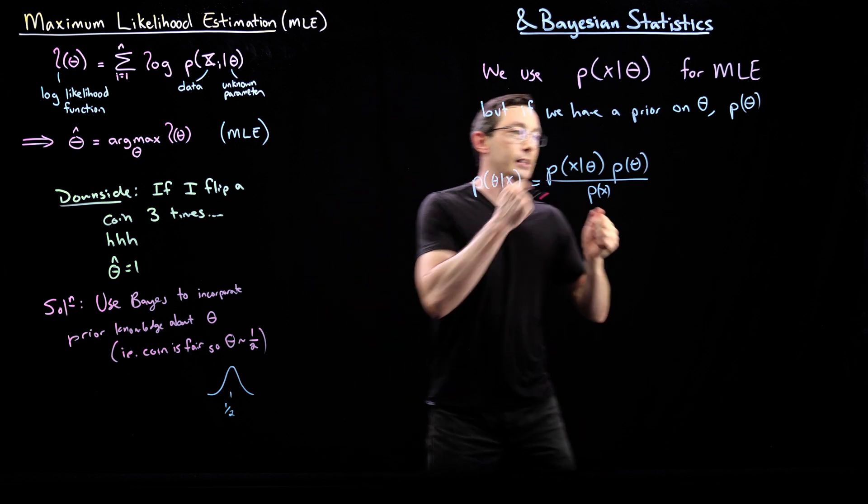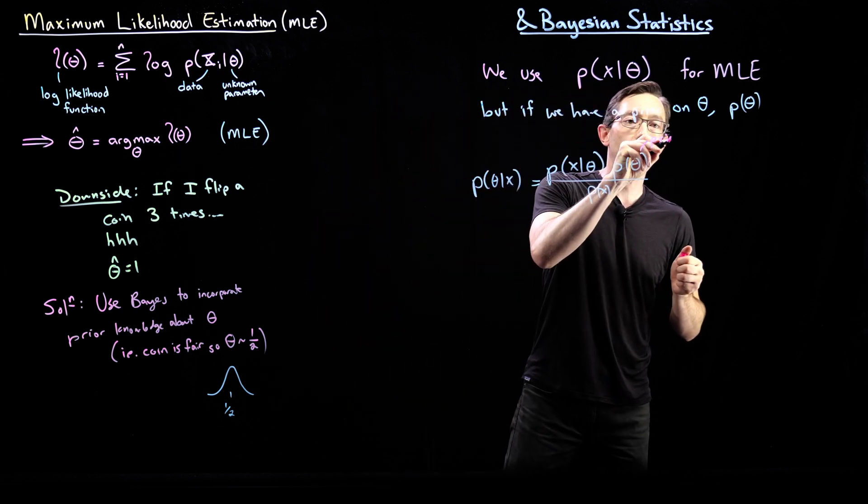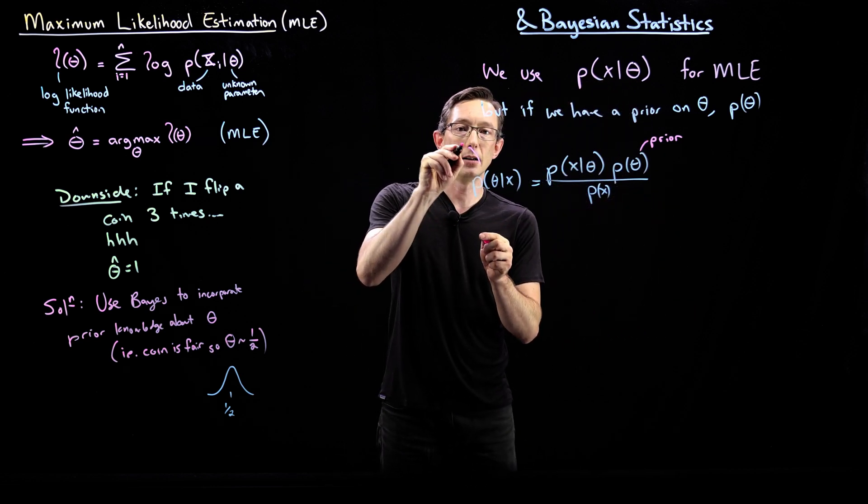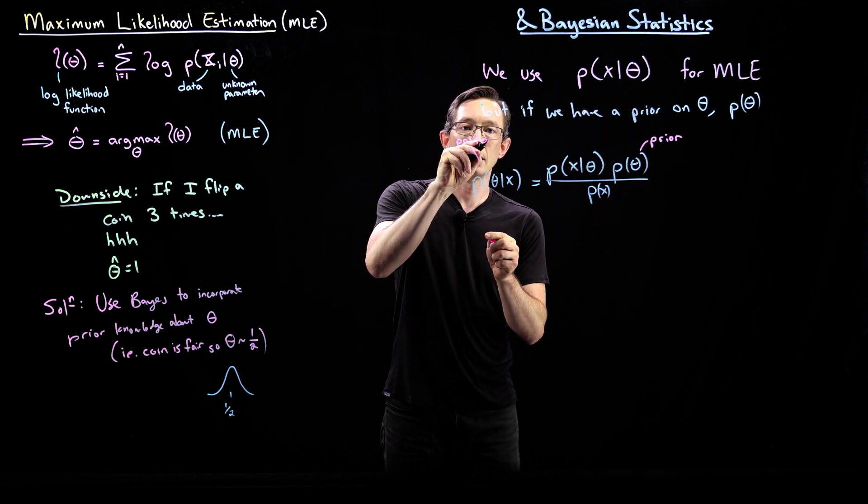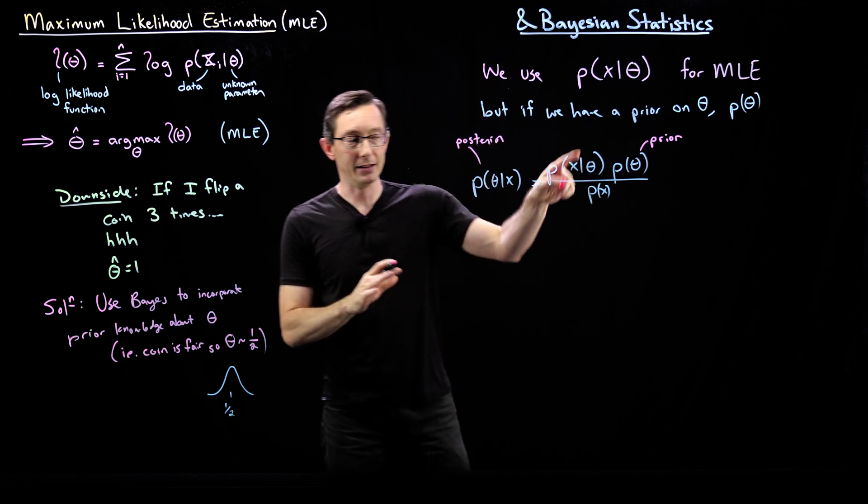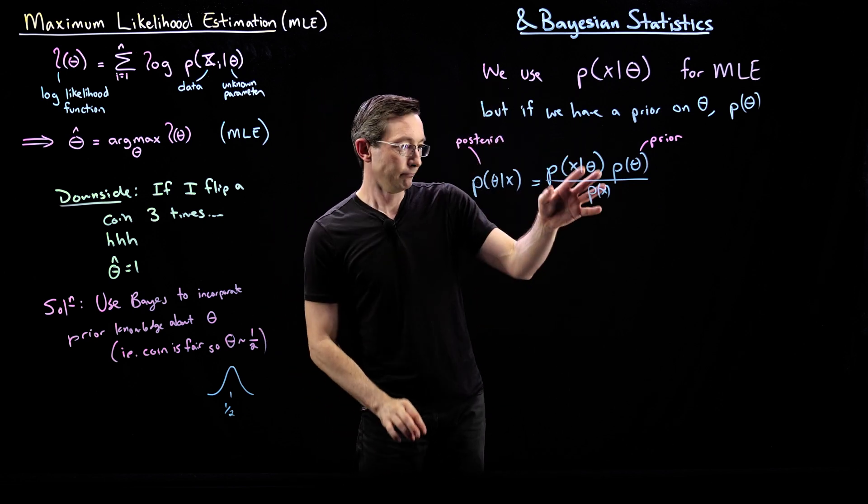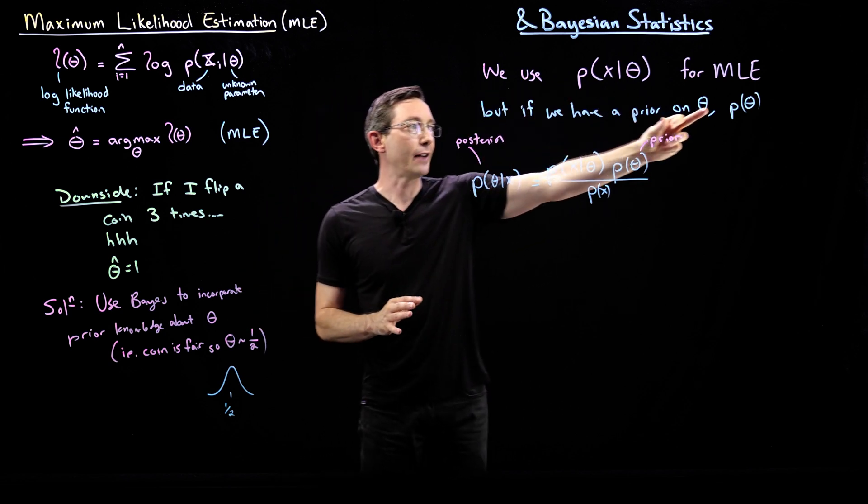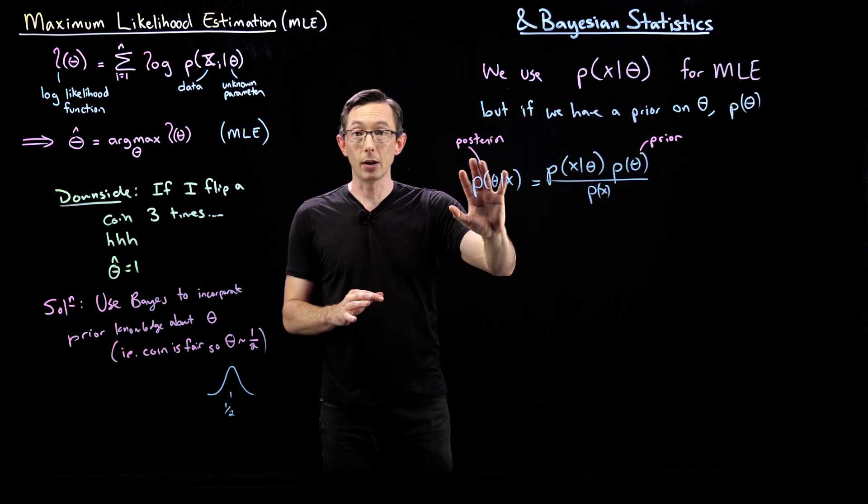This would be a useful thing to maximize over theta. And I'm just going to label these. This is my prior. This is my posterior distribution. And then these are the other distributions in Bayes' theorem. So if we have a prior, we can get something that looks a whole lot like Bayes' theorem.